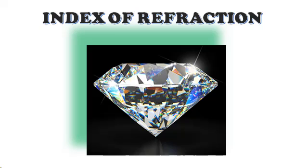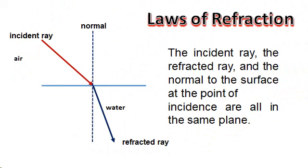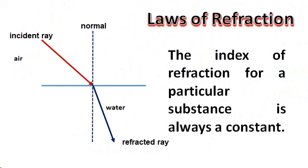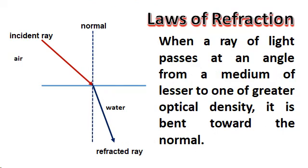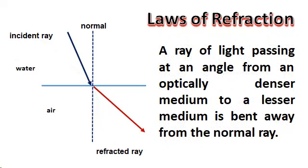What are the laws of refraction? The facts about refraction of light may be summarized in three laws of refraction. The incident ray, the refracted ray, and the normal to the surface at the point of incidence are all in the same plane. The index of refraction for a particular substance is always a constant. When a ray of light passes at an angle from a medium of lesser to one of greater optical density, it is bent toward the normal. Conversely, a ray of light passing at an angle from an optically denser medium to a lesser medium is bent away from the normal ray.